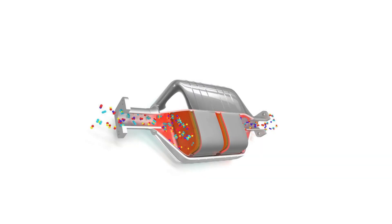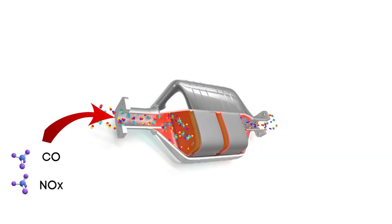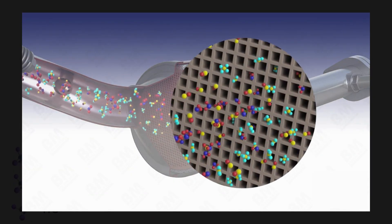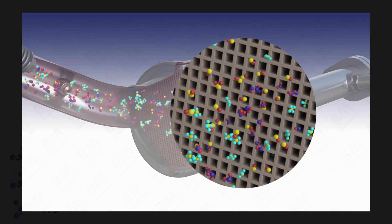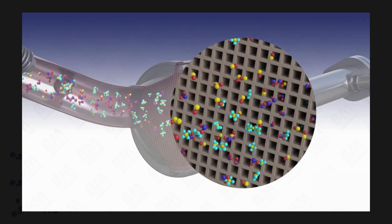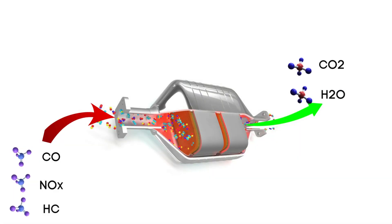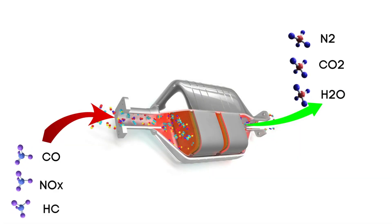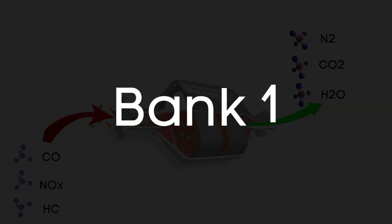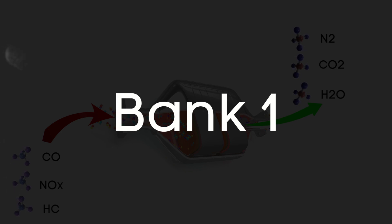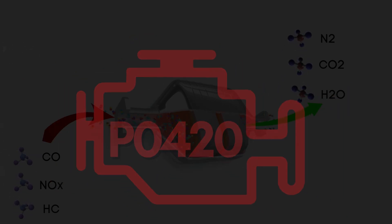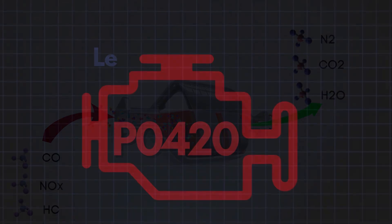When the engine releases harmful gases like carbon monoxide, nitrogen oxides, and hydrocarbons, these gases travel through the catalyst and are converted into safer gases like steam, carbon dioxide, and nitrogen. When Bank 1 catalytic converter efficiency is below threshold, the ECM flags it as a problem and triggers the P0420 trouble code.